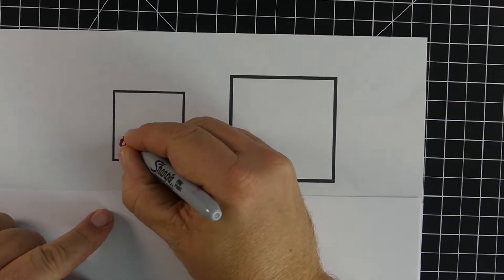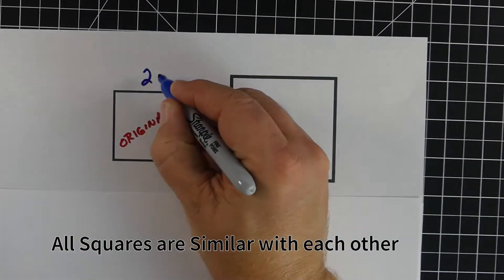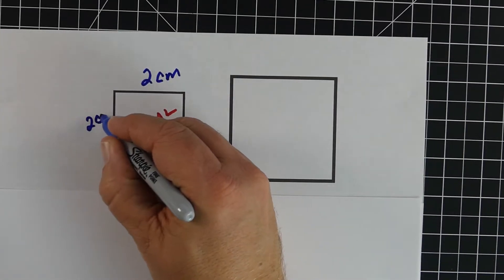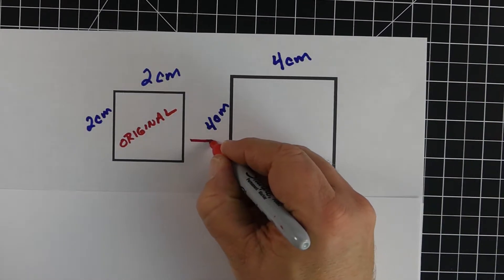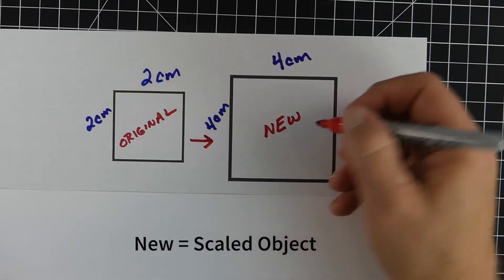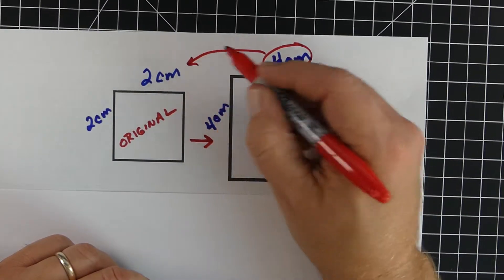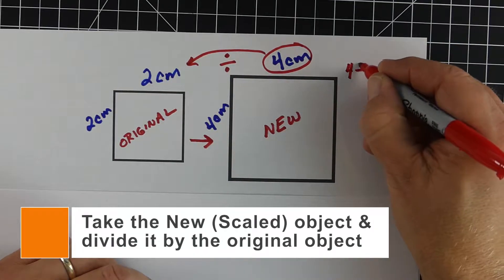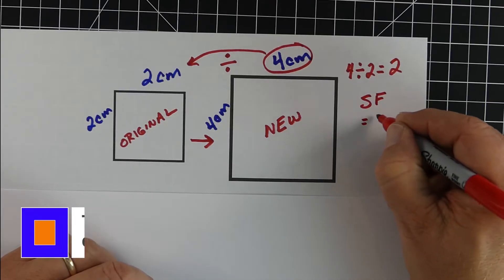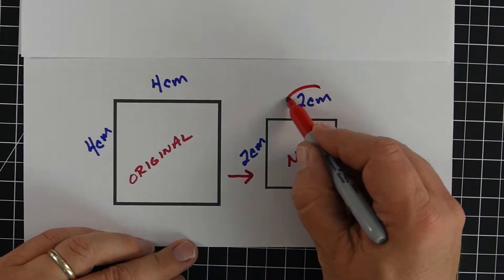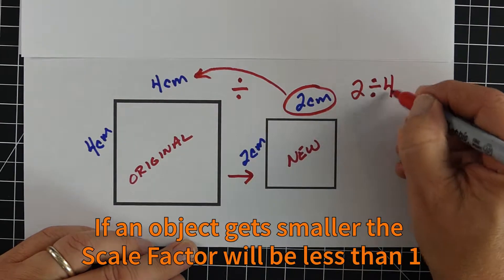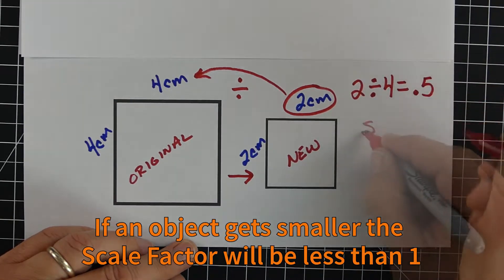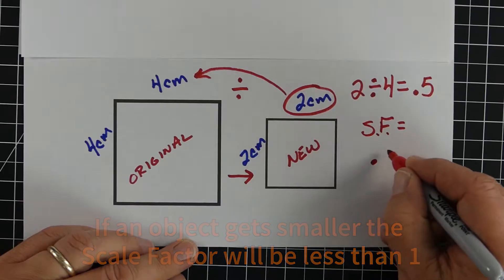First, finding the scale factor. In this example we're using squares — they're always similar to each other. The one on the left is the original; the one on the right is our new square, or our scaled object. The way we find scale factor is we take the side on the right and divide it by the original side — new divided by original — using corresponding sides. In this case we get a scale factor of 2. For the next two squares, same thing: new divided by original gives us 0.5. Anytime objects are shrinking, you always have a scale factor of less than one.